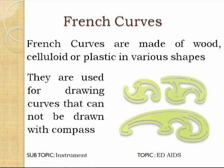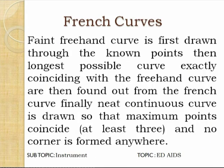French curves are made of wood, celluloid, or plastic in various shapes. They are used for drawing curves that cannot be drawn with a compass — with a compass we can draw only arcs and circles, but other curves can be drawn with French curves. First, a faint freehand curve is drawn through the known points. Then the longest possible curve that exactly coincides with the freehand curve is found from the available French curve set, and a continuous curve is drawn so that maximum points coincide. At least three points should coincide, the curve should be continuous, and no corners should be formed.